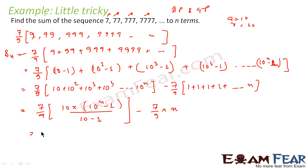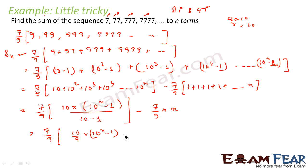Taking 7/9 common, the final answer is 7/9 × [10/9 × (10ⁿ minus 1) minus n], because 10 minus 1 is 9. That is our answer.